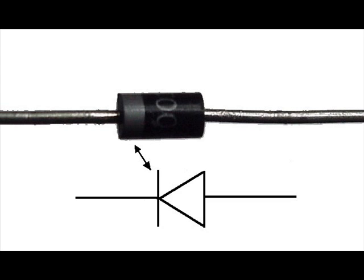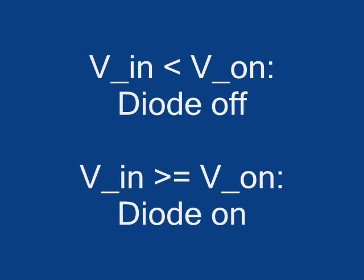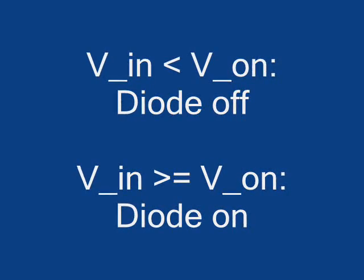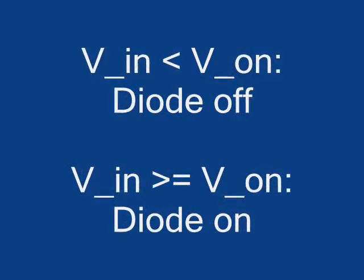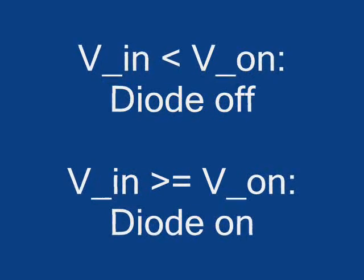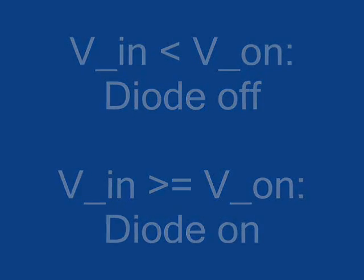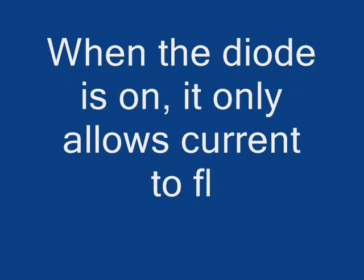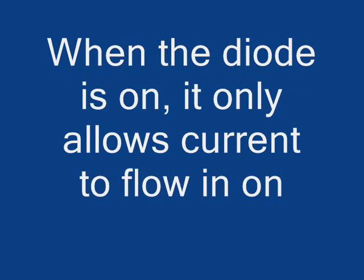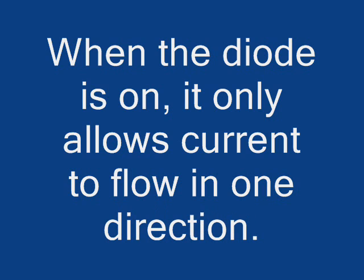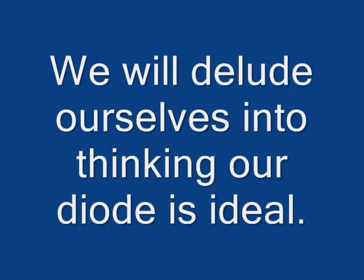To do this, rectifiers use diodes. A diode is like a valve. They switch on when the voltage drop across them is sufficiently great enough. This voltage is usually called V_on. When the diode is on, it only allows current to flow in one direction. When the diode is off, if it's ideal, no current flows. We will assume our diode is ideal.